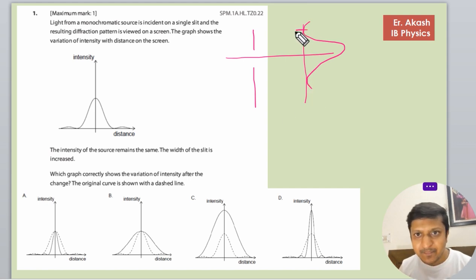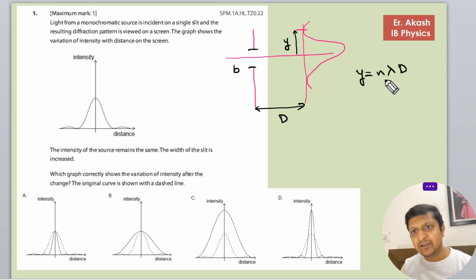And this is the y. I'll just make it with some different color. Okay, so this is b and this is the d and this distance is y and the formula for y we know that is n lambda d by b.